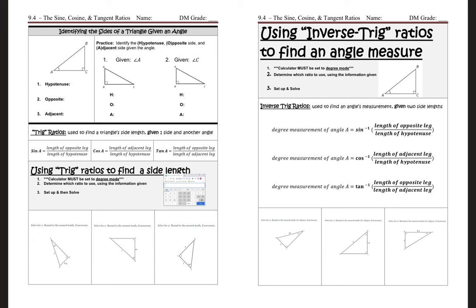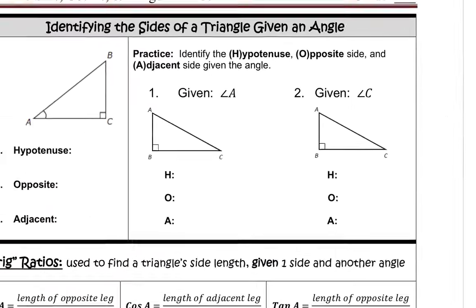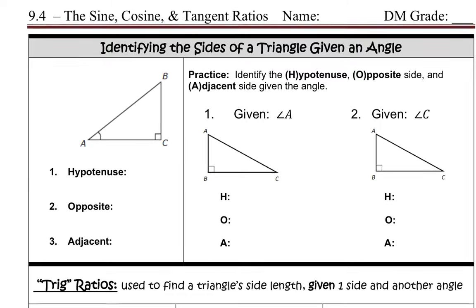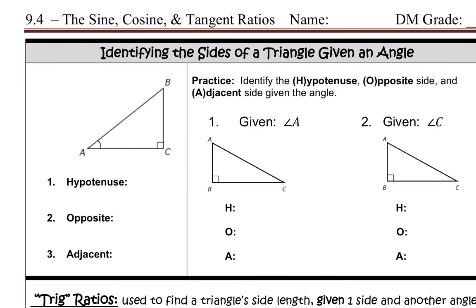Welcome back. We are moving on to our last lesson in unit nine, which is 9.4. We're going to talk about the sine, cosine, and tangent ratios. This is one of the best lessons I like to teach because I think it makes a lot of sense for many students. Let's first talk about identifying the sides of a triangle given an angle.